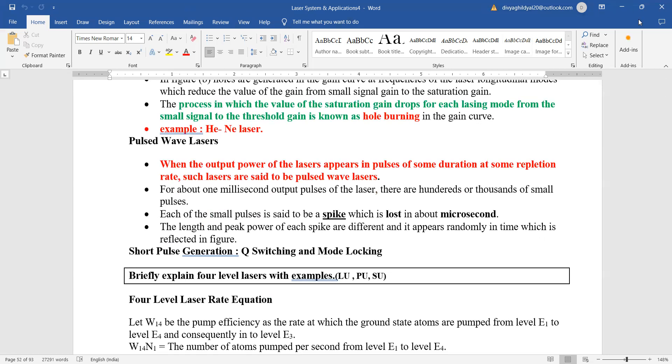Hence, helium-neon laser is better compared to ruby laser. And not only this, the output of ruby laser is said to be in the form of spikes, which we will explain in the next lecture.